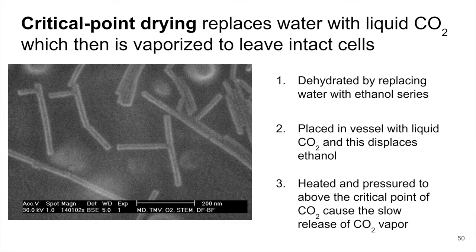Freeze-drying is also referred to as critical point drying. This is a process where we replace water in the sample with liquid CO2, and then the CO2 is vaporized. This allows us to remove water without disrupting cell structure — simply evaporating or boiling water off would change the cell structure of biological samples. Using liquid CO2 to replace the water leaves these cells intact.